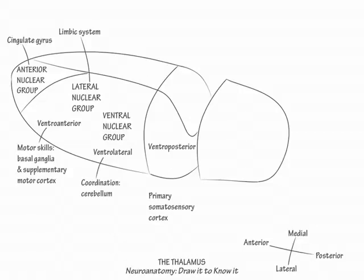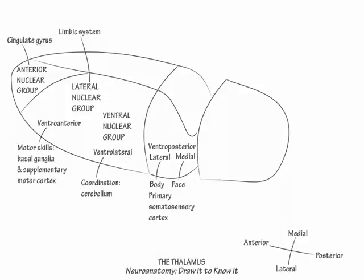Indicate that the ventral posterior medial nucleus encodes input from the face and that the ventral posterior lateral nucleus encodes input from the body. The sensory information in the thalamus has a very specific onion peel somatosensory map in which the fist is adjacent to the mouth. Patients with a ventral posterior medial stroke present with cheiro-oral syndrome — on the side opposite the damaged thalamus, they have impaired sensation around the mouth and in the fist.